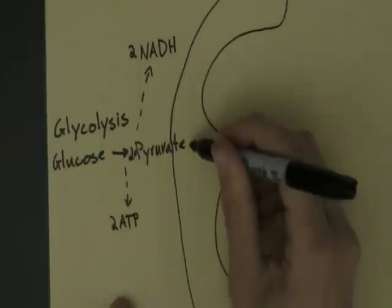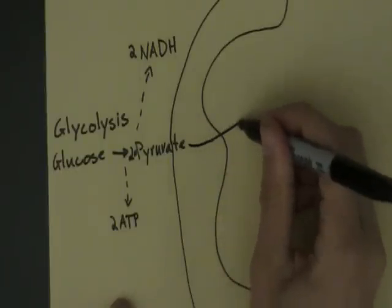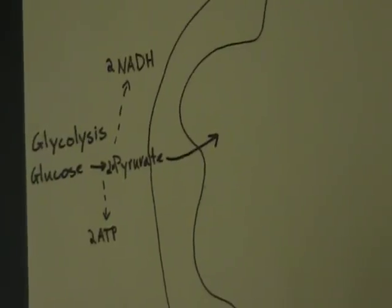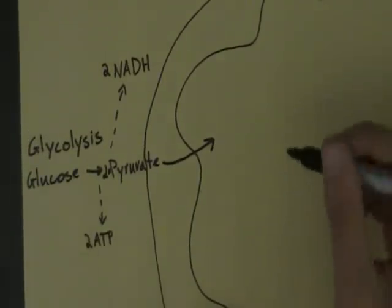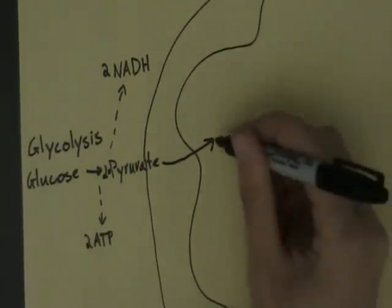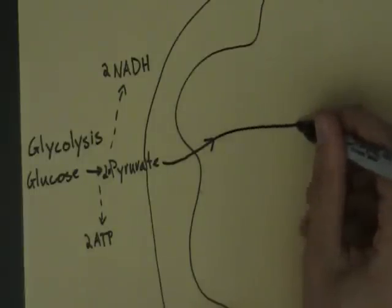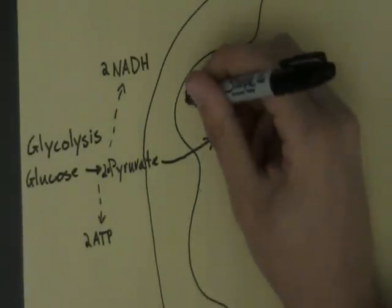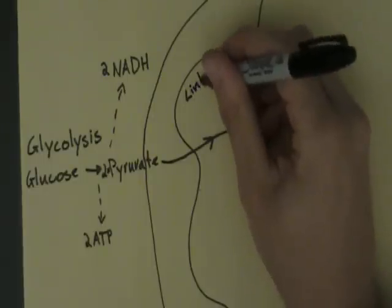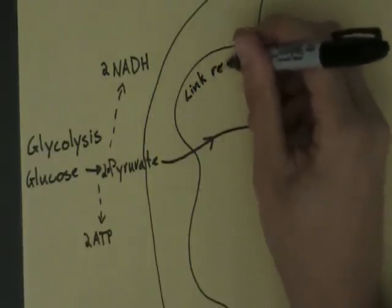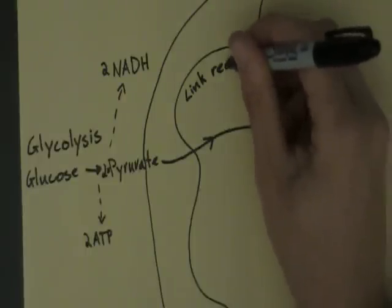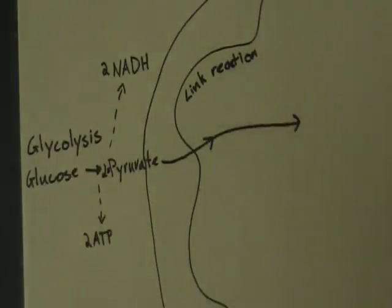The pyruvate, when oxygen is present, moves into the matrix of the mitochondria. When it's inside, it undergoes something called the link reaction. I'm going to draw this arrow a little bit longer to provide enough room for the link reaction.